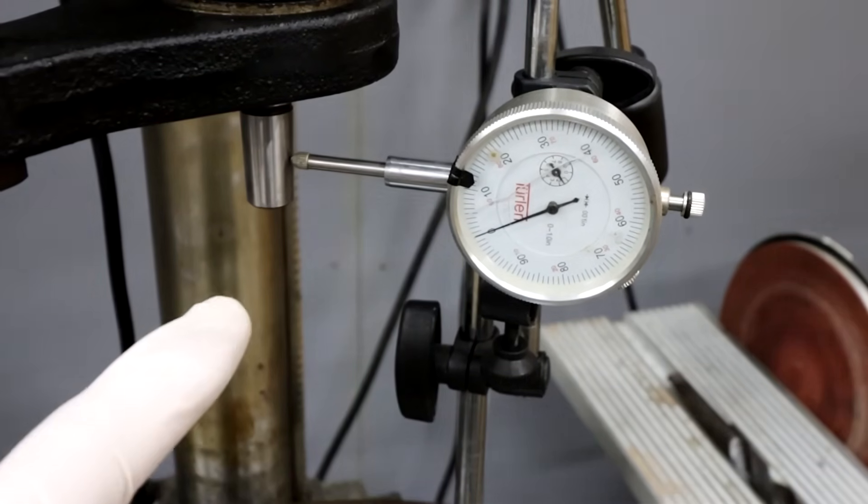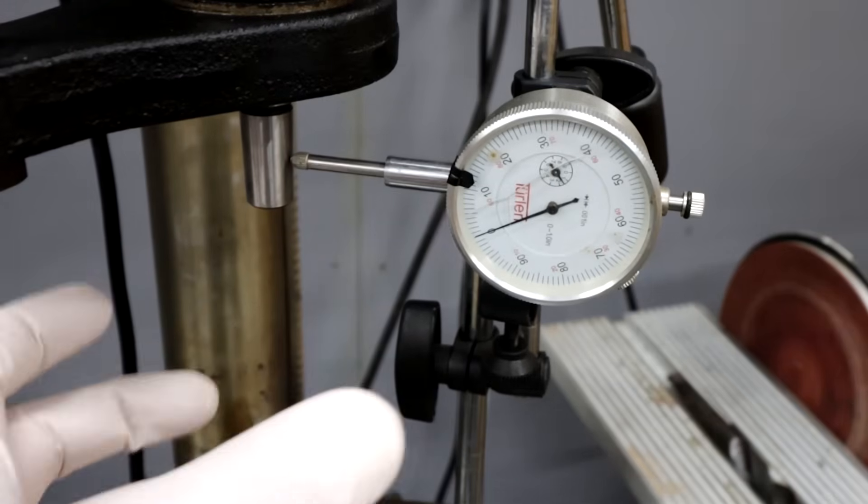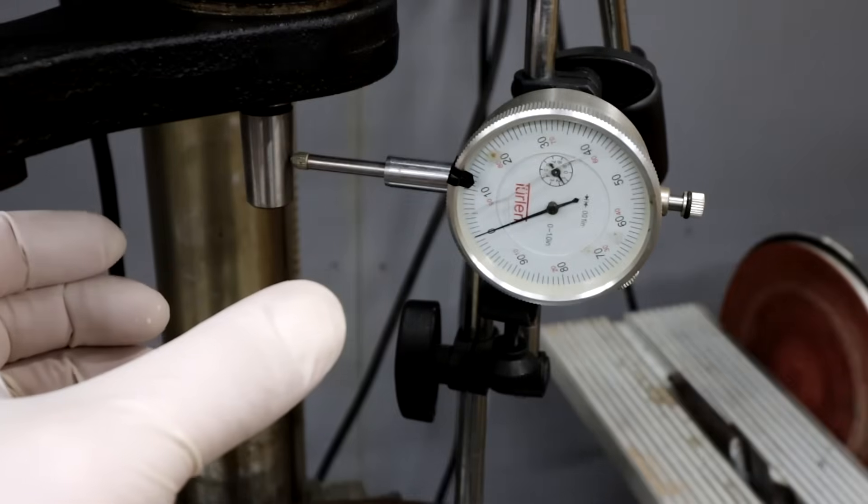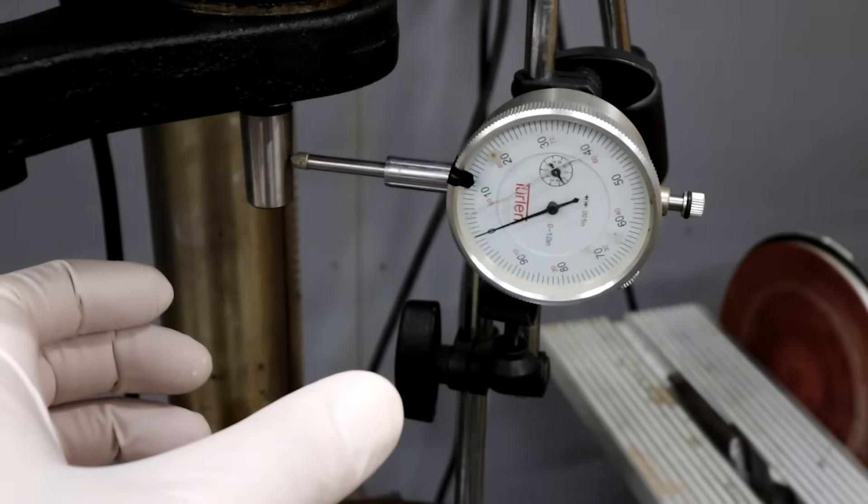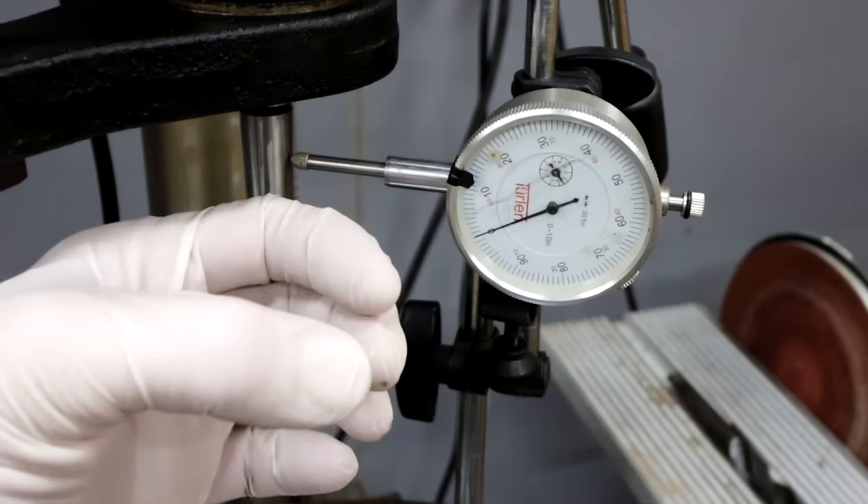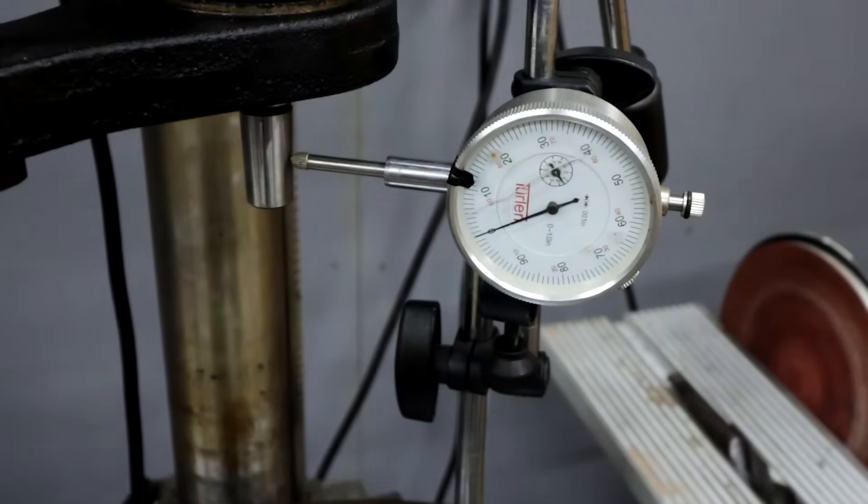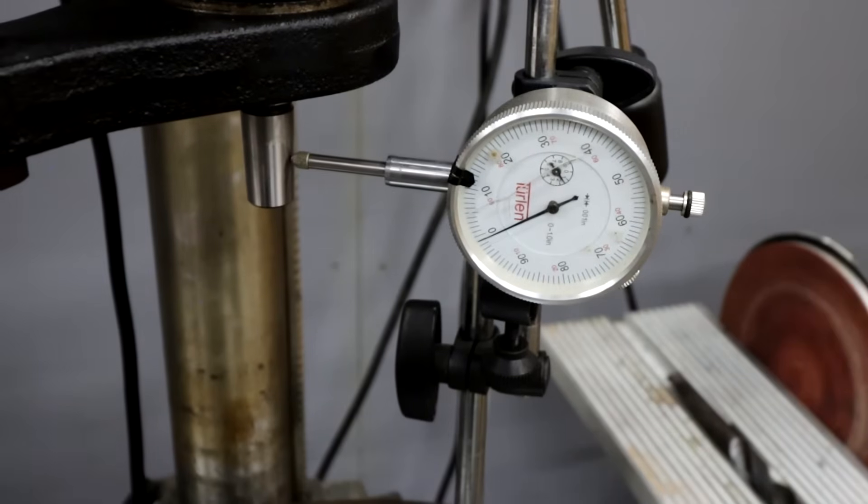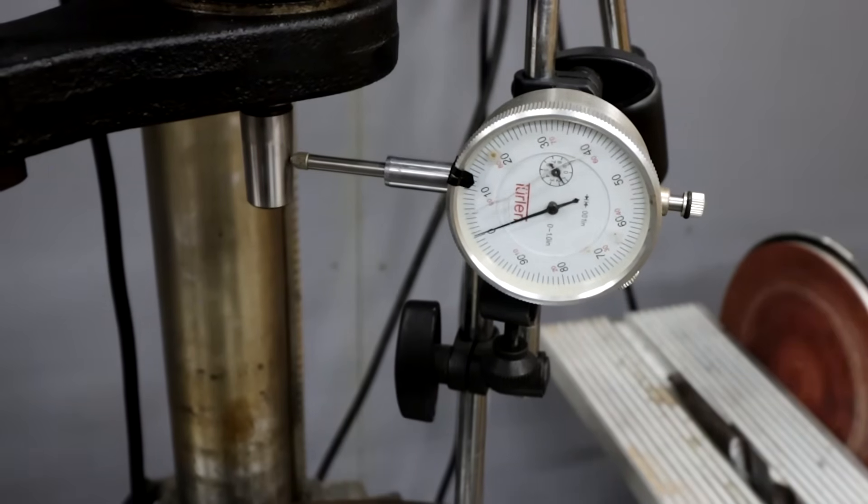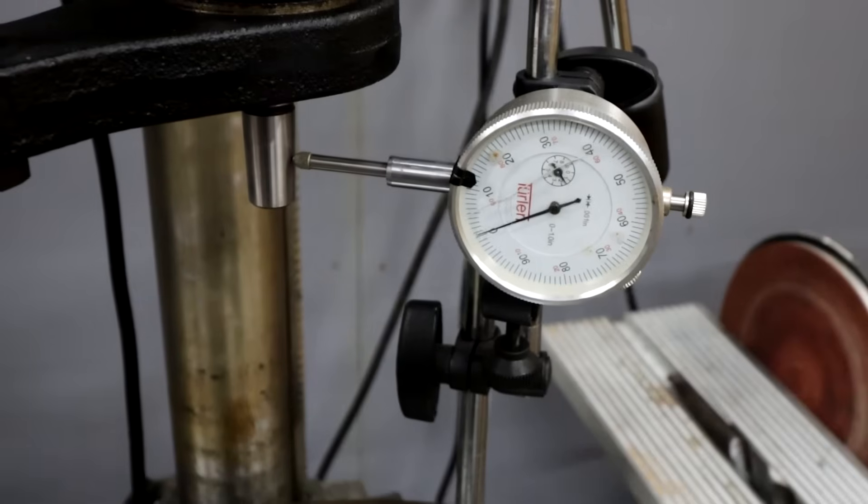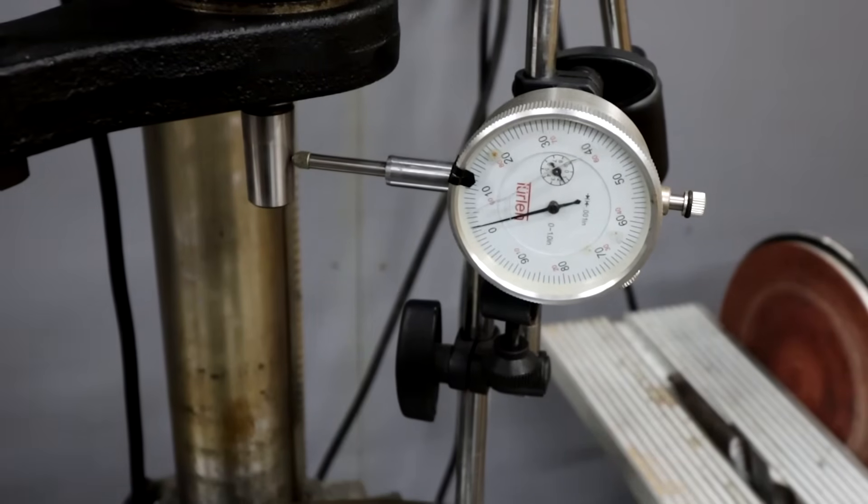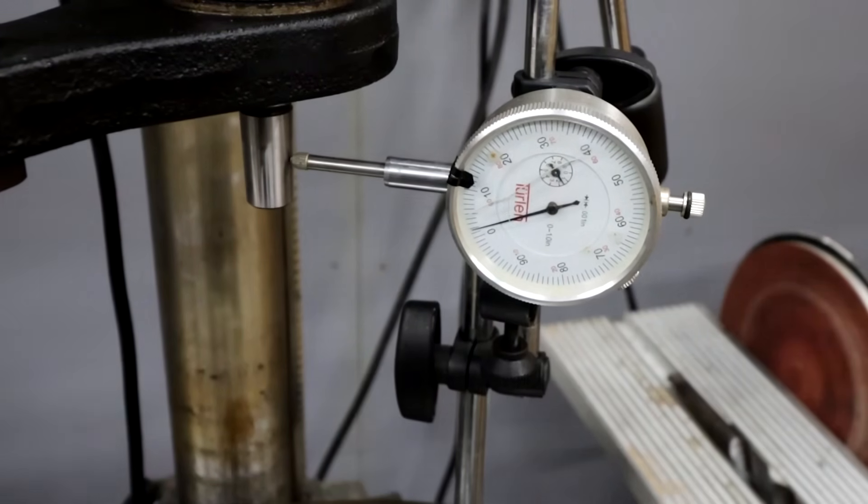I'm going to grab a Sharpie. We're going to mark the high spot just in case after we put the chuck on, we find that it increased. We may want to pop that off and try to rotate a little bit and offset. So we're going negative. So that's a low side. About there is max.